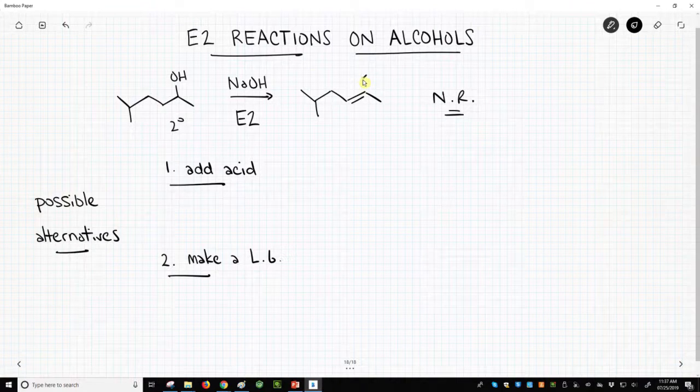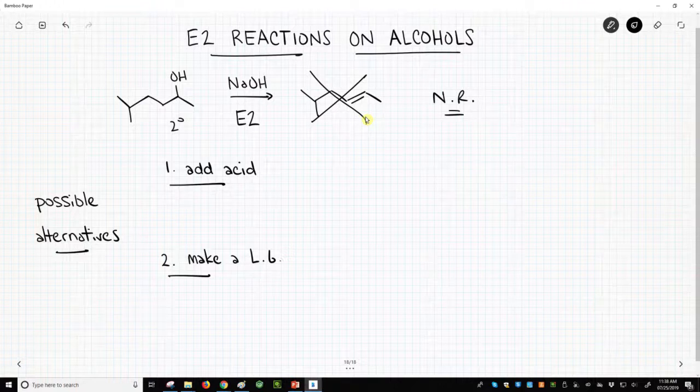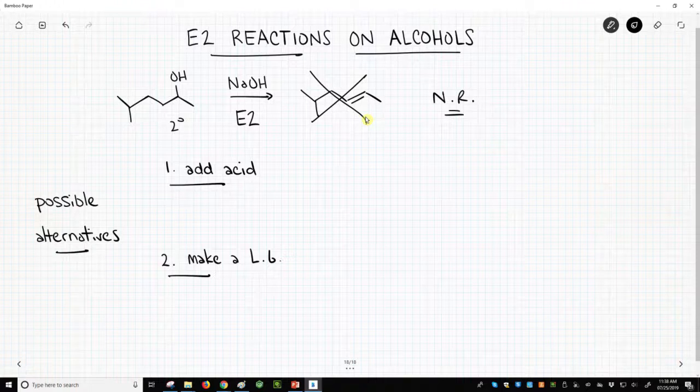In fact, just to be clear, let's put an NR there. We won't get an E2, and the reason is we don't have a leaving group. Well, that hasn't been a big problem with alcohols. We can always make a leaving group, so let's propose a solution.